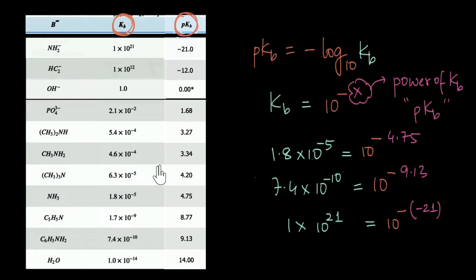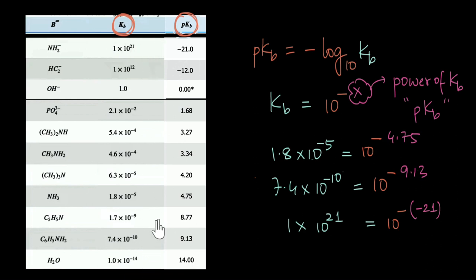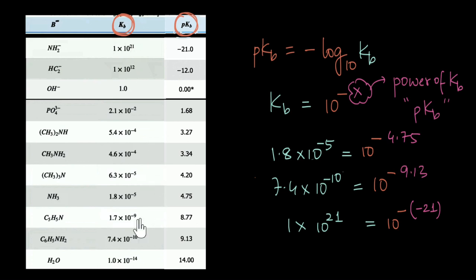So instead of using KB values directly, we can present them in the form of PKB, and anyone reading these PKB values can easily find KB using the equation PKB = −log(KB). The advantage is that while KB values in this table range from 10²¹ to 10⁻¹⁴ — a difference of almost 10³⁵ — the PKB values only range from −21 to +14, a difference of just 35. Our data becomes much more compact and far easier to plot on a graph.